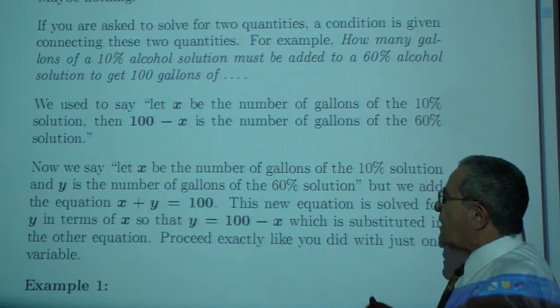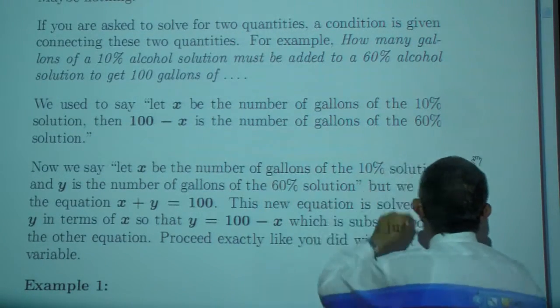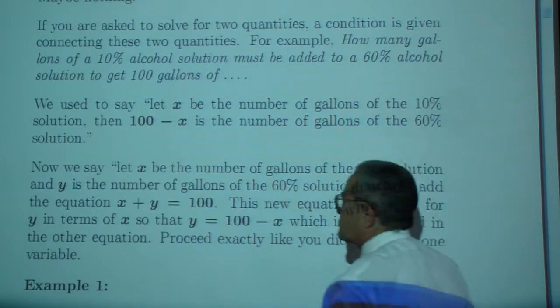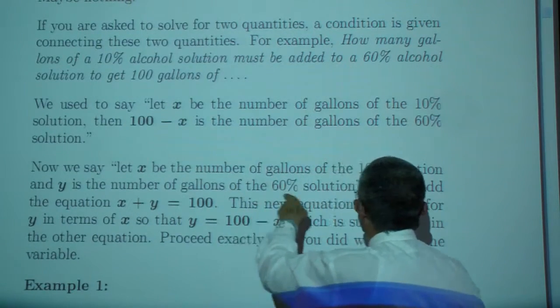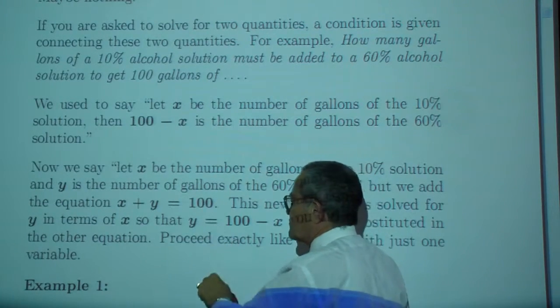Now we are going to say x is still the number of gallons of the 10% solution, but y is the number of gallons of the 60% solution, and when we add the two we get 100.